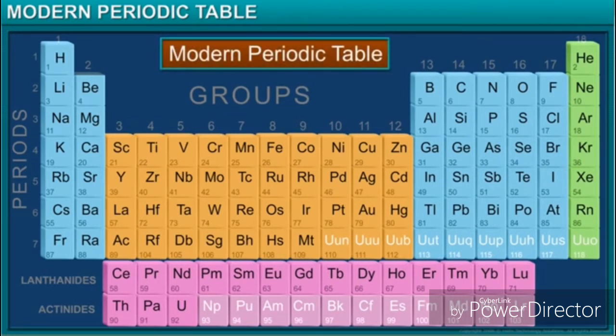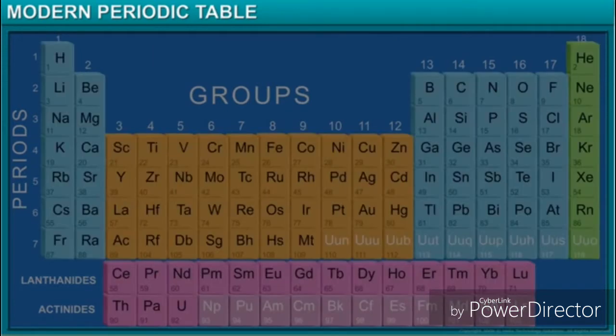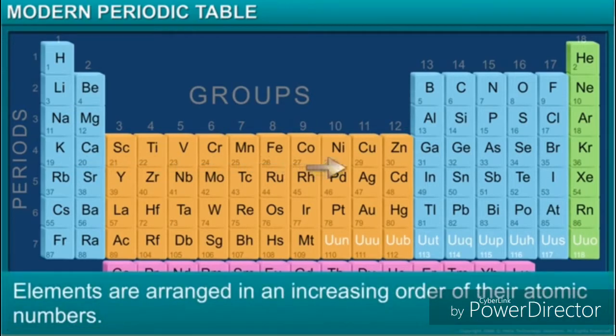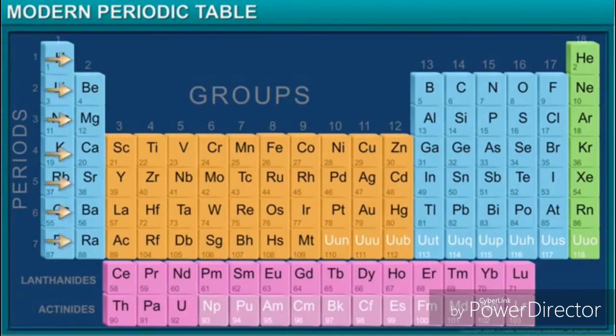Description of the modern periodic table: The total number of elements in the modern periodic table equals 118 till now. 92 are available in Earth's crust, while the lower 26 are prepared artificially. It consists of seven horizontal periods.